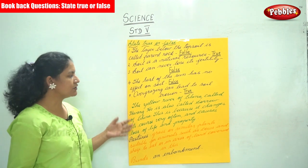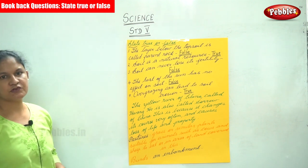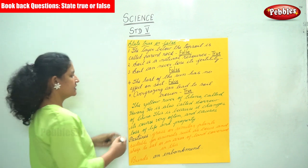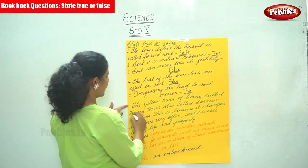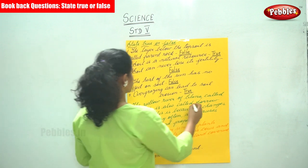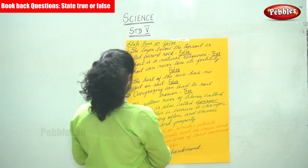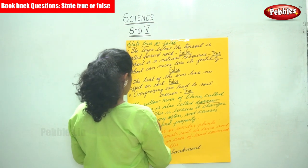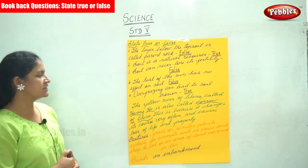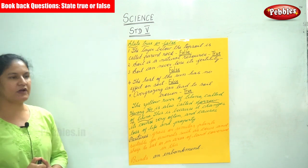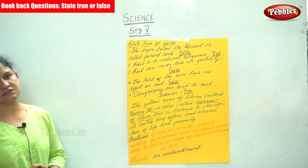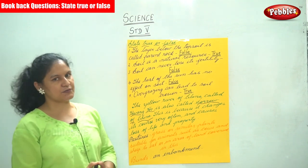Now, the Yellow River of China. In China there is the Yellow River, which is called the Hwangho. It is also called the Sorrow of China because it changes its course very often and causes loss of life and property.